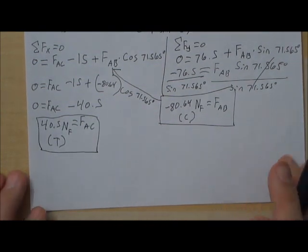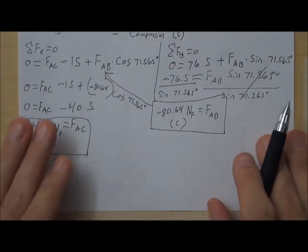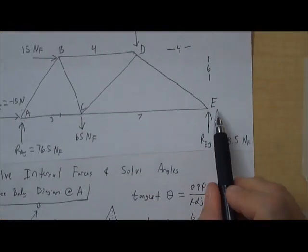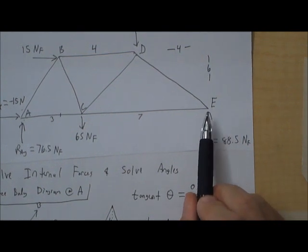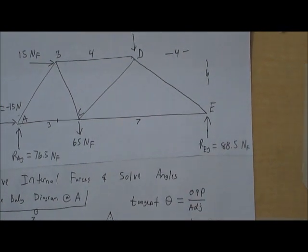In the y direction, the first thing that comes up is RAY. 76.5. It's positive because it's going up. And when we're talking about the y direction up and down, up is positive. So, zero equals 76.5. Do we have anything else? RAX? No. FAC? No. But FAB is going up also to the right. So, we're going to say plus FAB.